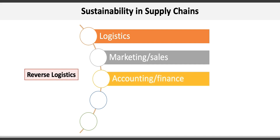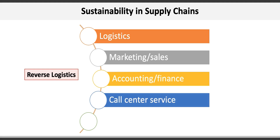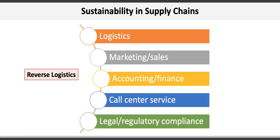Accounting and finance must approve warranty repairs, track reverse logistics revenue and costs, and handle billing and payment to suppliers and third-party vendors. There may also be a call center service, which manages service center calls along the supply chain to coordinate work activities such as collecting items from diverse sources for recovery operations. Finally, legal and regulatory compliance involves consistently monitoring compliance with local, state, federal, and country laws, including important export regulations, environmental rules, and service contract commitments.